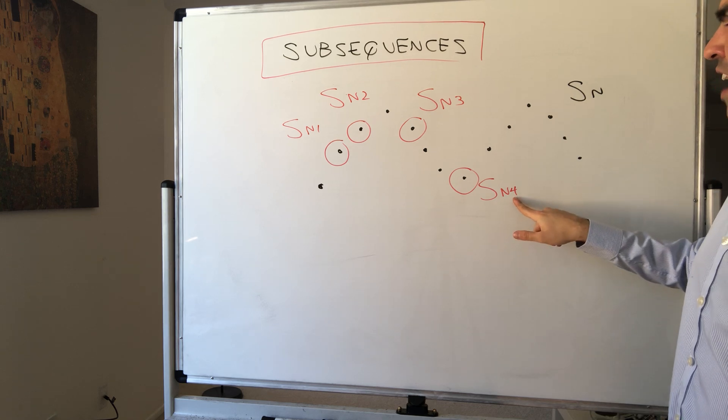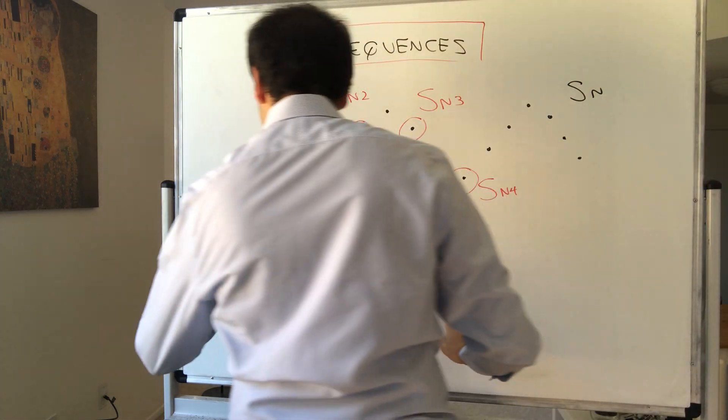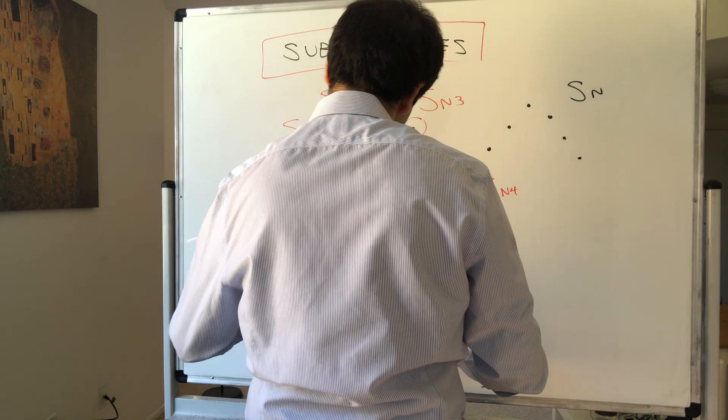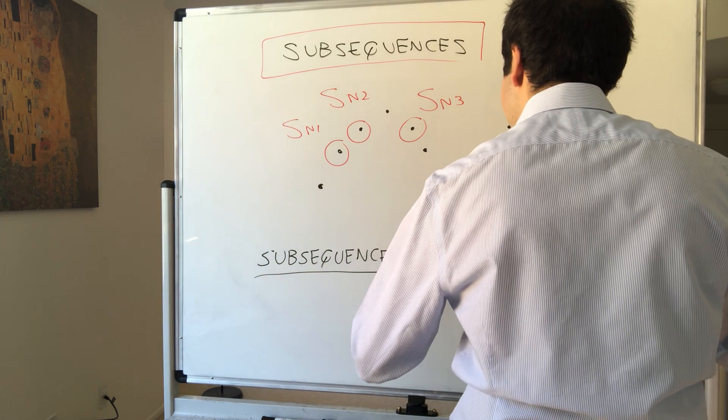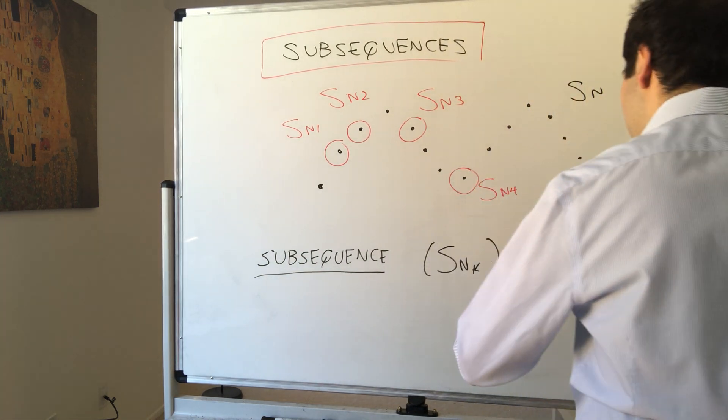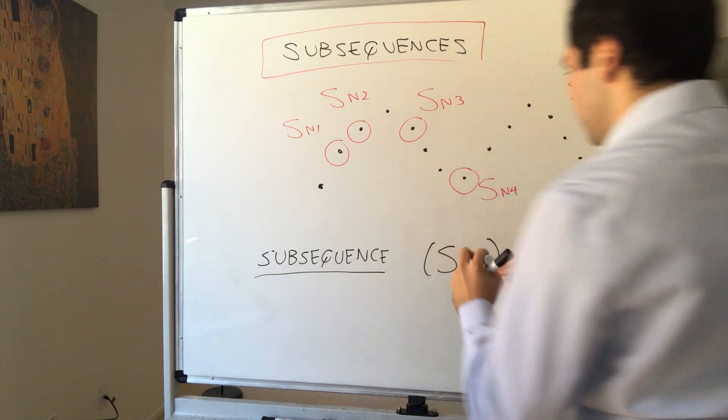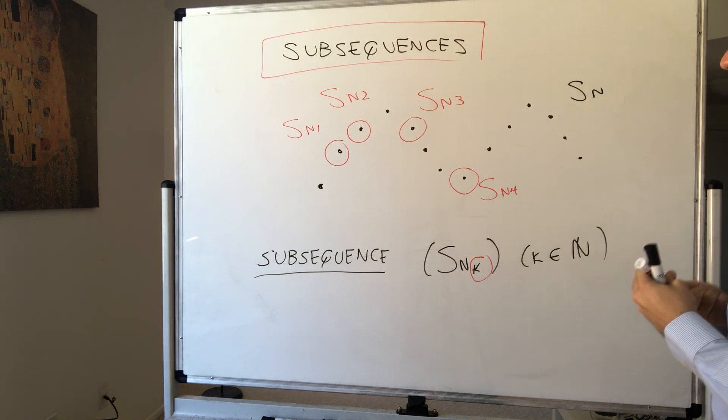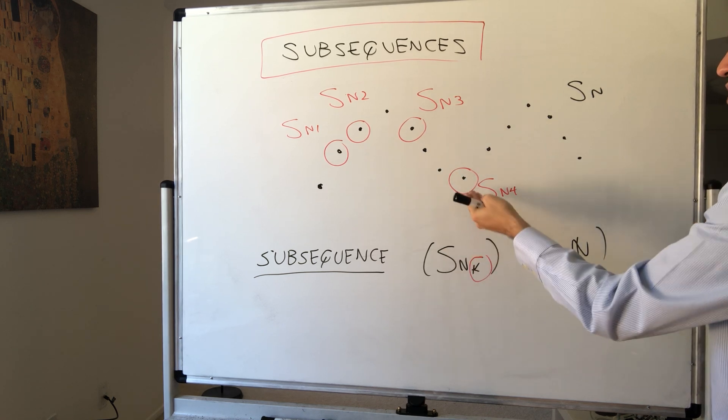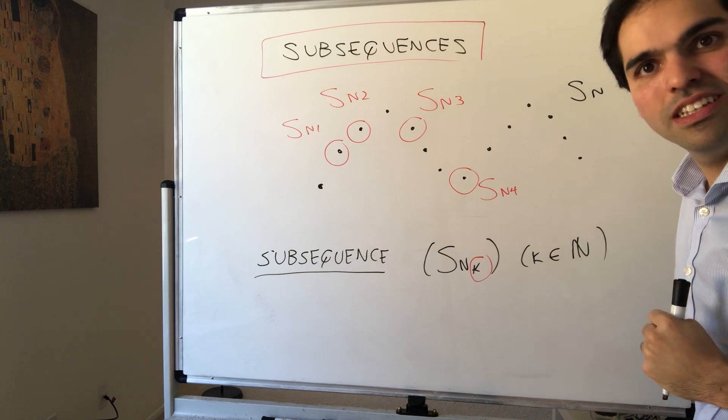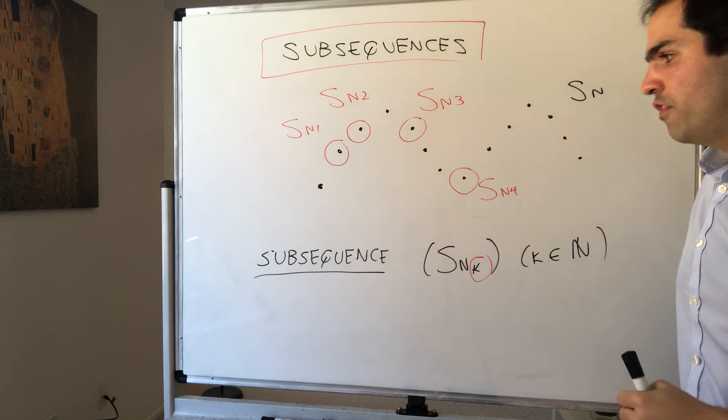Namely for every value of K, you associate a certain value of your sequence Sn. So subsequence, it's basically a sequence of the form SnK, where K is a natural number. In other words, all that this is saying is, every stop of the express train also has to be a stop of the original train, but the express train could skip a couple of stops.